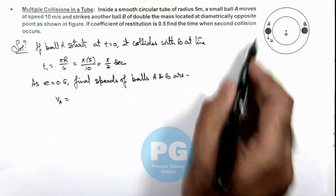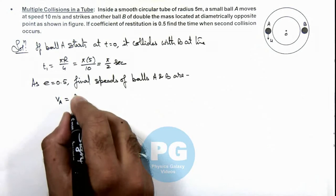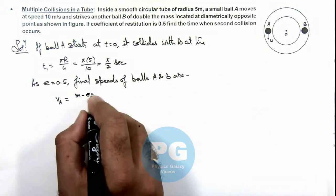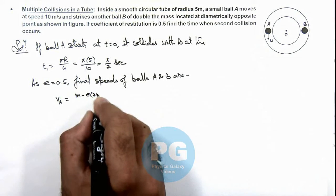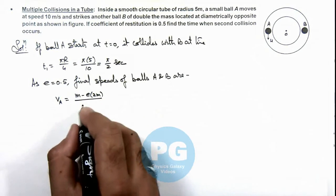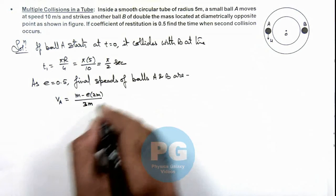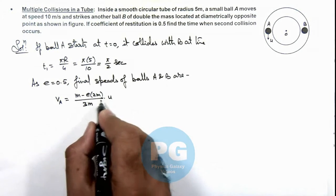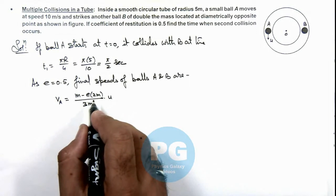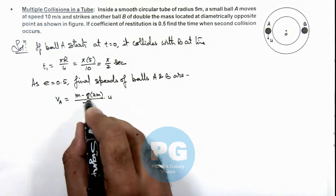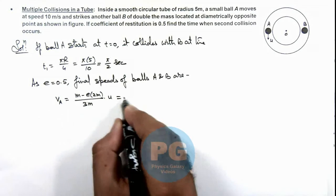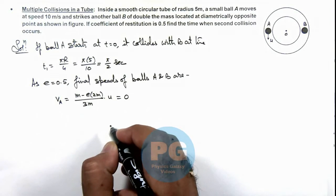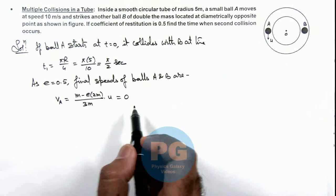The velocity of ball A after collision can be given as (m - e × 2m) / (3m) × u. This expression you can check, we already discussed in the concept videos. If you substitute the value of e as 0.5, the value comes out to be zero. That means after collision ball A will come to rest.